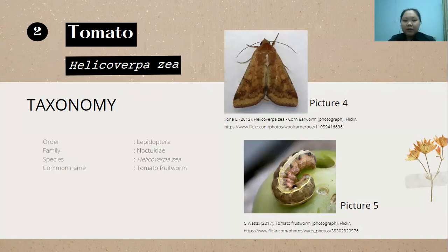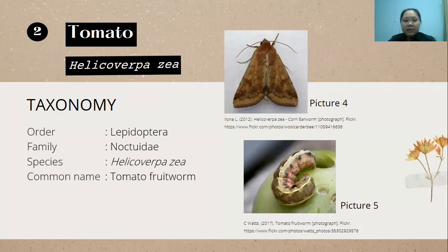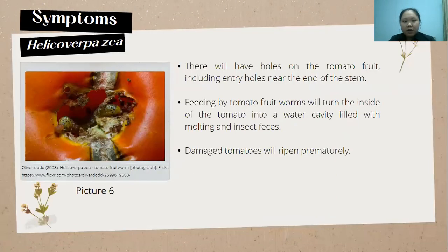Now moving to tomatoes with the insect pest Helicoverpa zea. Its order is Lepidoptera and the family is Noctuidae. The common name is the tomato fruit worm. Picture four shows the adults of Helicoverpa zea and picture five shows the tomato fruit worm feeding on tomatoes.